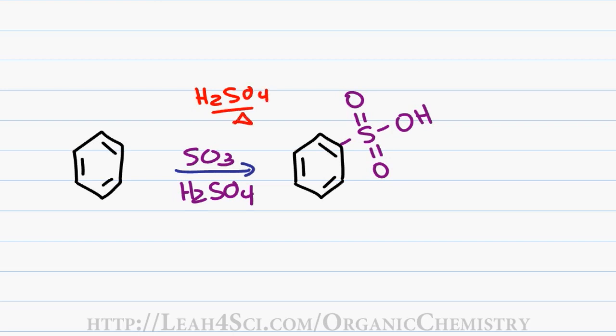The fuming sulfuric acid will undergo a reaction to create the super electrophile that we discussed in the introductory video. That's how you get the SO3 to react and that's how you get benzene to attack.